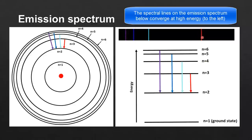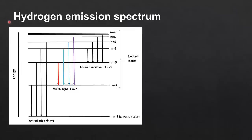To summarize, the colored lines on the black background of an emission spectrum correspond to the energy emitted when an electron transitions from a higher energy level to a lower energy level — in this case, down to n equals 2.